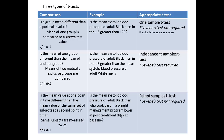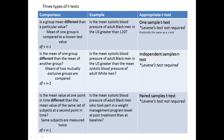Finally, the paired samples t. We don't need Levene's because we're measuring a variable in one group at two different points in time. The same subjects are measured twice, so degrees of freedom is N minus one. An example would be: is the mean systolic blood pressure of adult Black men who took part in a weight management program lower at post-treatment than at baseline?